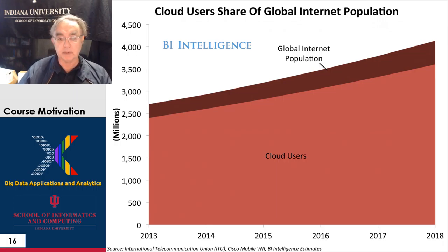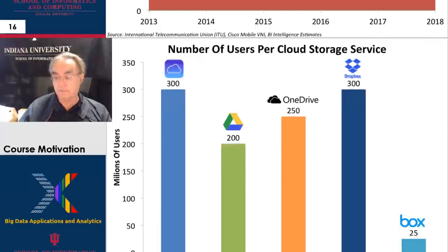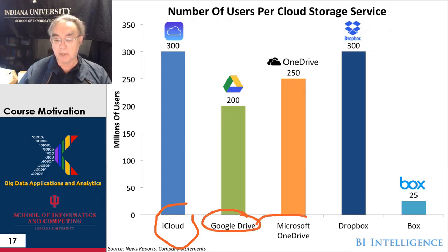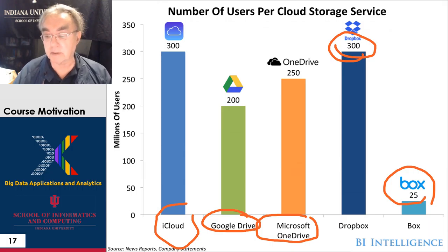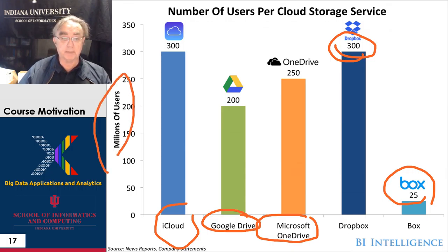The last two slides are not so important in my opinion. This tells you that most Internet users are actually also cloud users, from 2013 to 2018. The final slide shows the number of users per cloud storage service: here's Apple, Google Drive — which I must admit is the one I use most — and Microsoft is actually bigger than Google Drive according to this, with Dropbox still the dominant. Box, which is used by Indiana University for instance, is sizable but nowhere near the other major vendors. These numbers of users are quite healthy: Dropbox has 300 million users, competitive with Apple, Google, and Microsoft in the same broad category. So we have several viable cloud storage services, all with 200 to 300 million users.